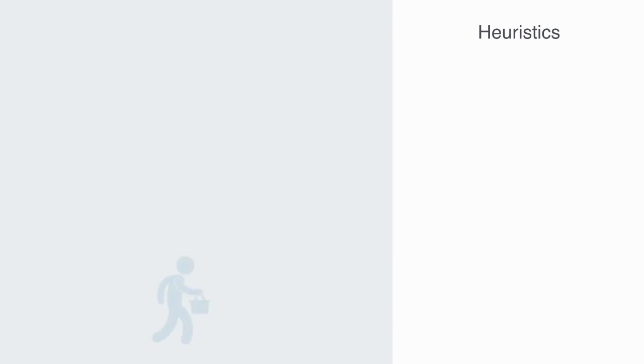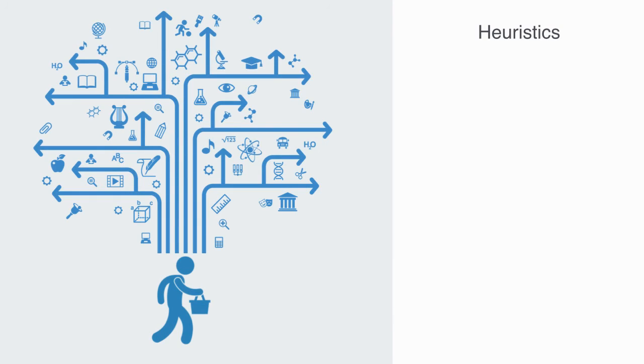When trying to find, an optimal solution, through logical reasoning is impossible or impractical. Heuristic methods, are also used to speed the process up, of finding satisfactory solutions. Heuristics, can be mental shortcuts, that ease the cognitive load, of making a decision.